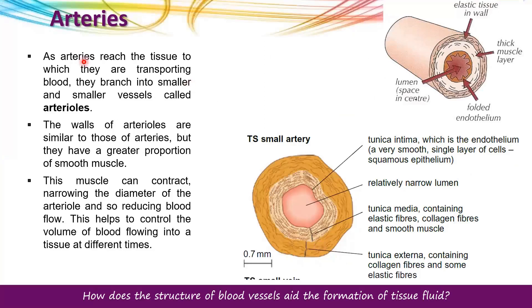As arteries reach the tissue, they branch off into smaller vessels called arterioles. The walls of arterioles are similar to those of arteries, but they have a greater proportion of smooth muscle. This muscle can contract, narrowing the diameter of the arteriole and reducing blood flow. As arteries divide into arterioles and finally into capillaries, the lumen gets narrower and blood pressure must be kept low. Smooth muscle contraction narrows the lumen further, helping to control the volume of blood flowing into the tissue at different times.